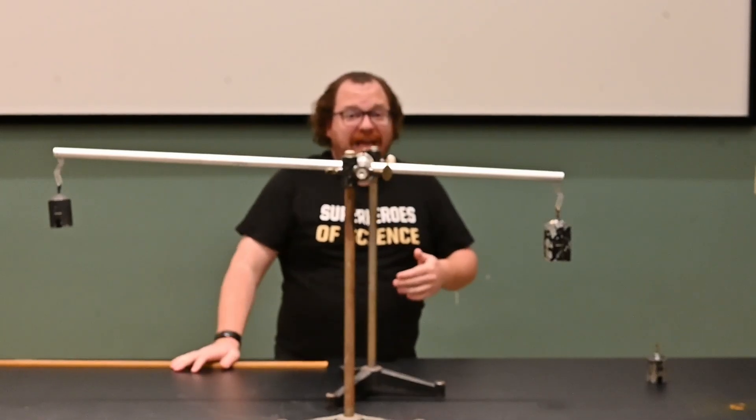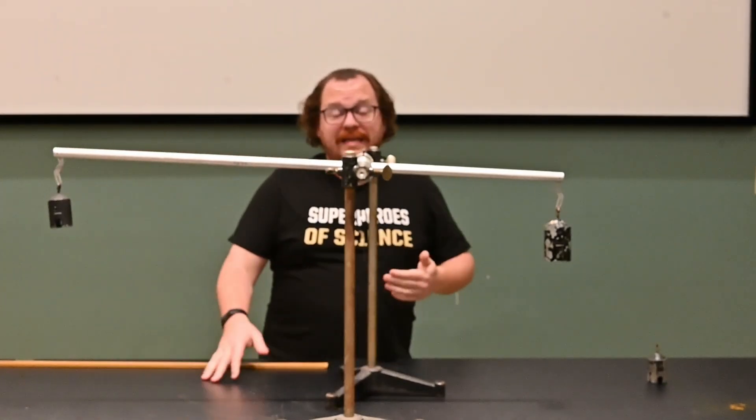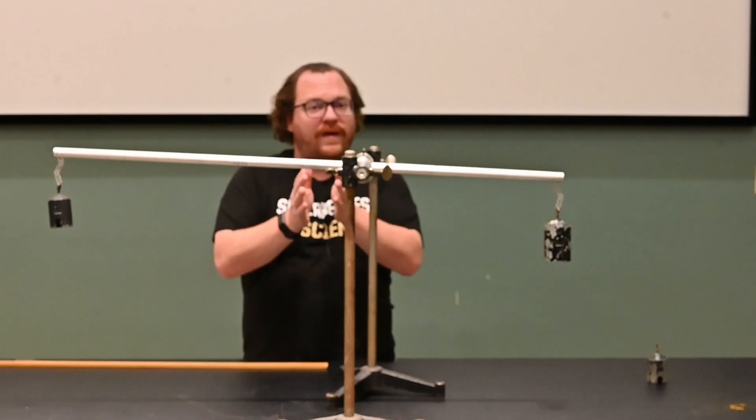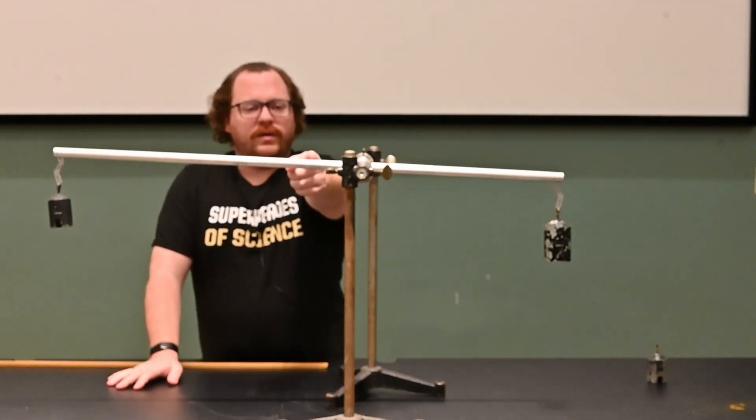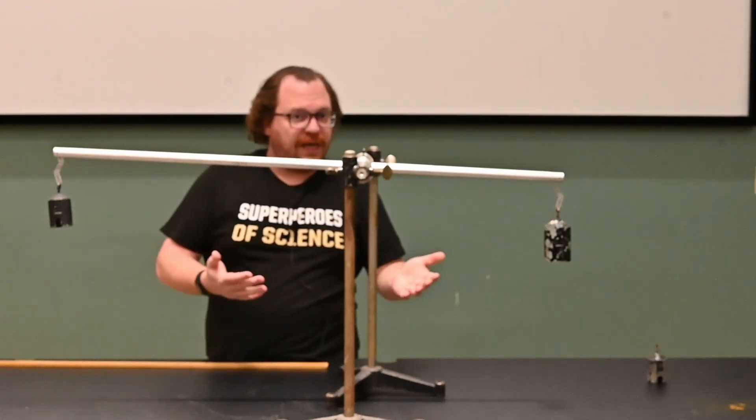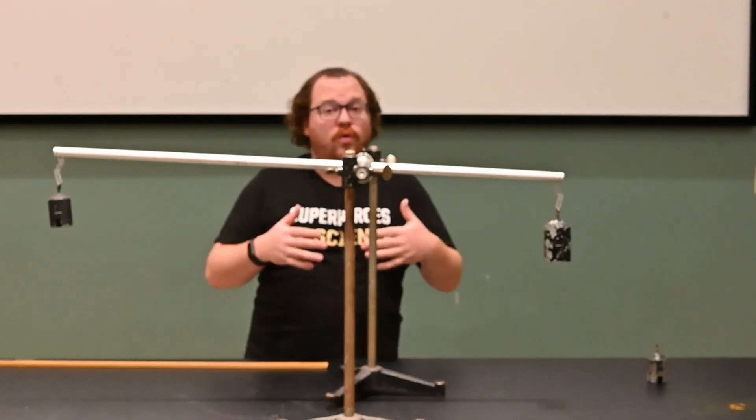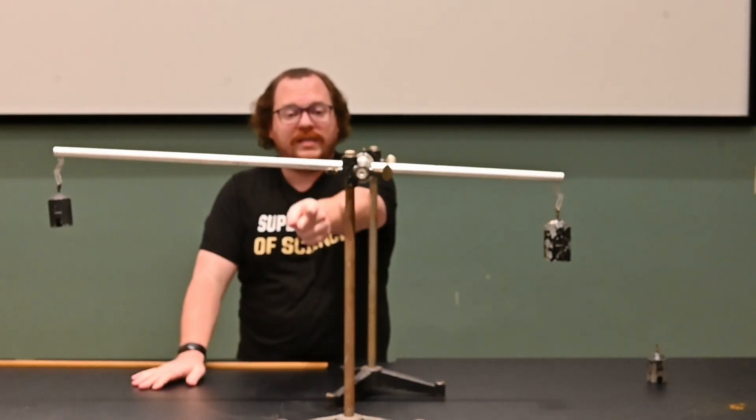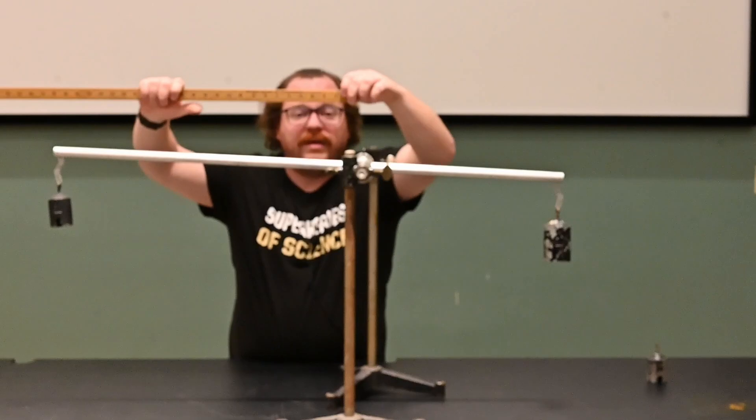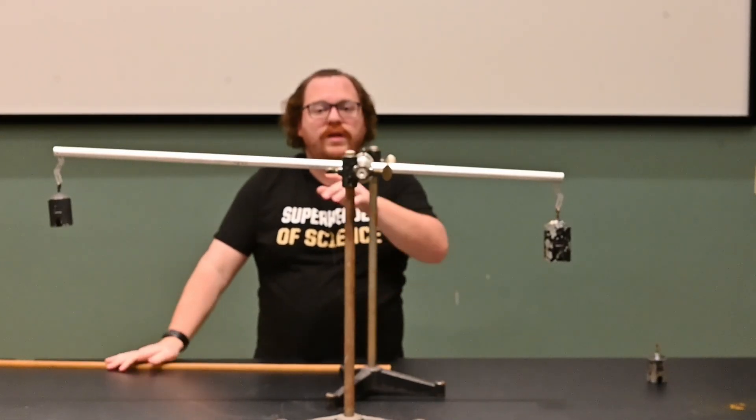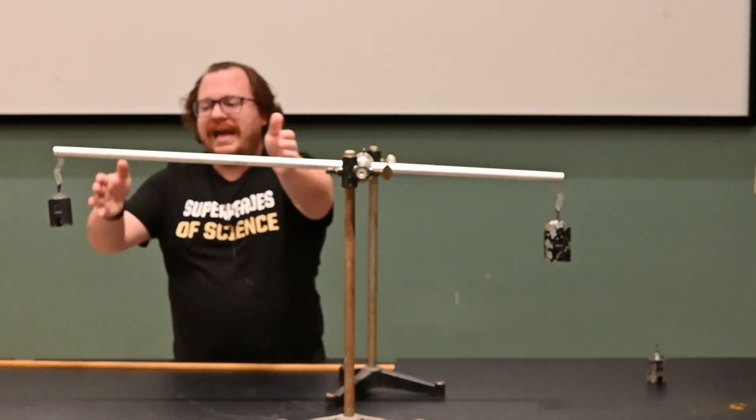The bar itself actually has weight. Every individual piece of this metal bar is being pulled by gravity. A lot of times we will simplify that, and we will find the center of mass of that bar. The center of mass for this bar is right here, about 50 centimeters from either side, right in the middle of the bar. Because that center of mass is here, we can treat it as its own torque. We have gravity pulling down on the center of mass of our bar, and there's a distance of about 10 centimeters from the pivot point. The mass of the bar times that 10 centimeter distance is going to create another torque that's adding to this one.